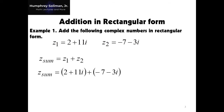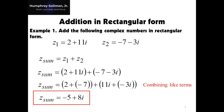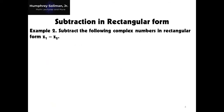Just like addition of algebraic terms, we can combine the similar terms in complex numbers, adding the real numbers and imaginary numbers separately. This will give us z sum equals negative 5 plus 8i.